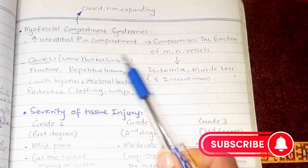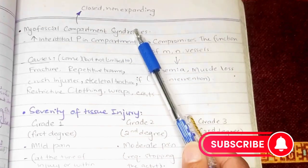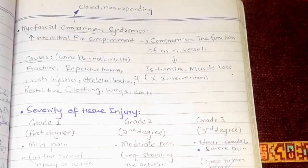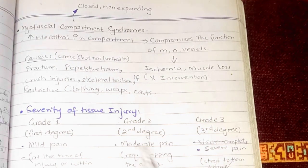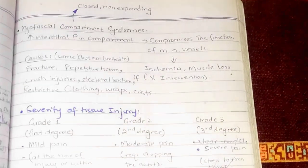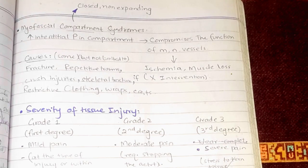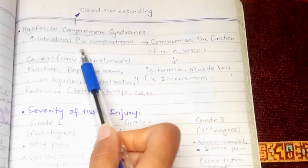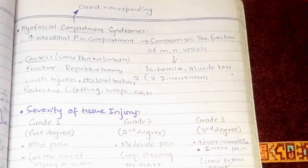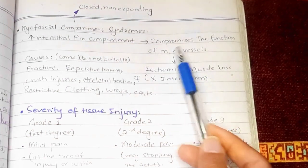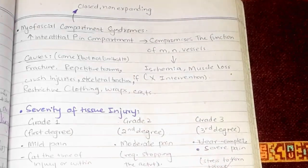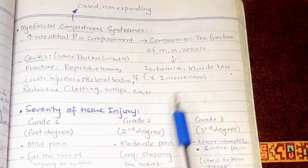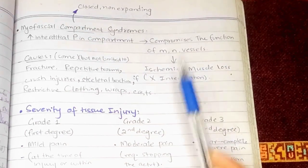Now we have myofascial compartment syndrome. The lower limb is divided into many compartments. A compartment is a closed, non-expanding space, so if there is increased interstitial pressure within the compartment, it compresses the nearby structures. This compromises the function of the muscles, nerves, and vessels surrounding the compartment, and if untreated, can result in ischemia and muscle loss.